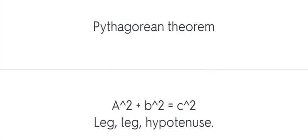Pythagorean theorem. A squared plus B squared equals C squared. Leg, leg, hypotenuse.